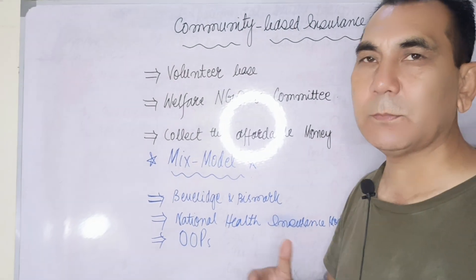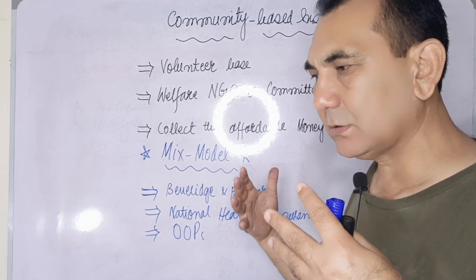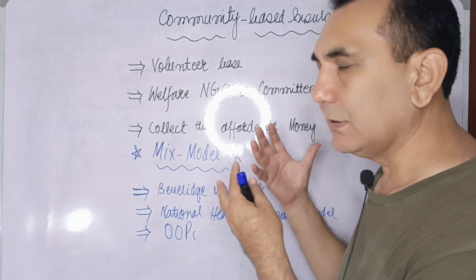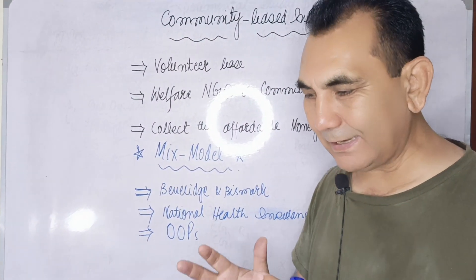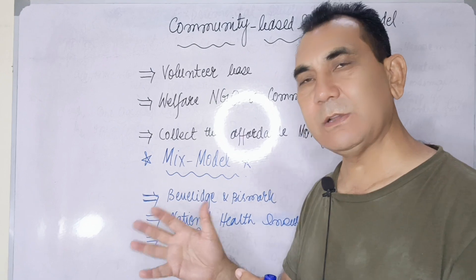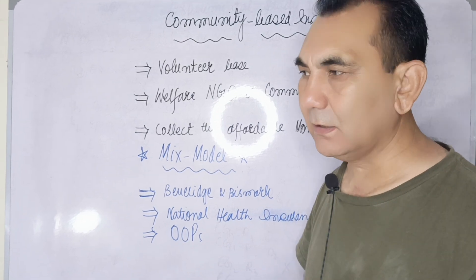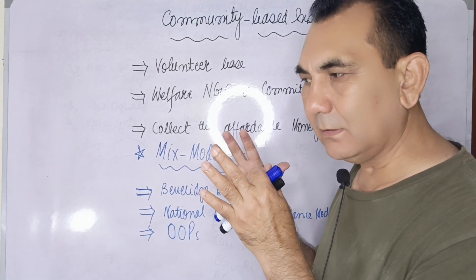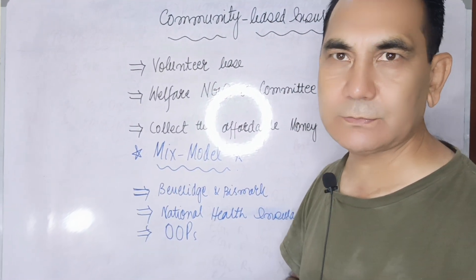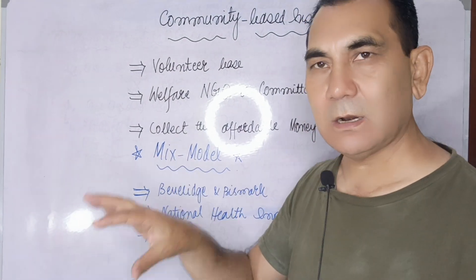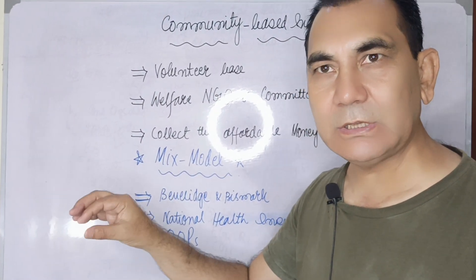This model runs in India and rural areas of India, as well as in South African countries. It is a very good model, but integrity and honesty in the collection of premiums remain a challenging issue. The community decides to form a welfare committee or small welfare NGO, and on a monthly or annual basis they deposit affordable money to that committee.